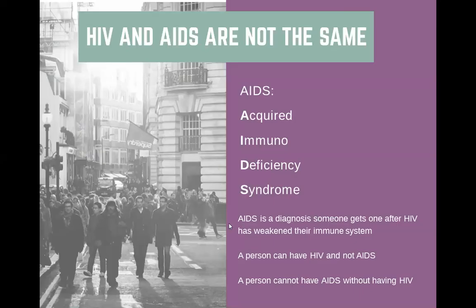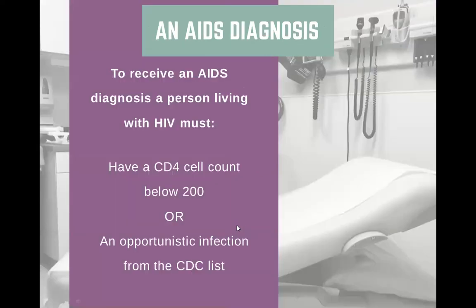AIDS stands for Acquired Immunodeficiency Syndrome. It is a diagnosis someone receives after HIV has weakened their immune system so much that there is almost no immune system left. To be clear, someone can have HIV but not AIDS — but a person cannot have AIDS without having HIV. To receive an AIDS diagnosis, someone living with HIV needs to either have a CD4 cell count below 200, or what is called an opportunistic infection.